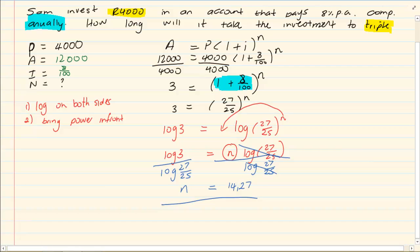If you want to convert the .27 to months, we know that in a year we have 12 months. So you are going to say 0.27 times 12, which should give you about 3 months. So we have 14 years and 3 months.